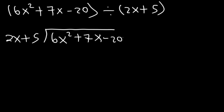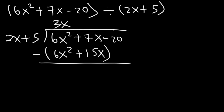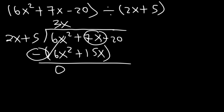We need to divide, then multiply, then subtract. Starting with division: 6x squared divided by 2x is 3x. Then multiply: 3x times 2x is 6x squared, and 3x times 5 is 15x. Now subtract — these two will cancel, giving us 0, and then 7x minus 15x is going to be negative 8x.